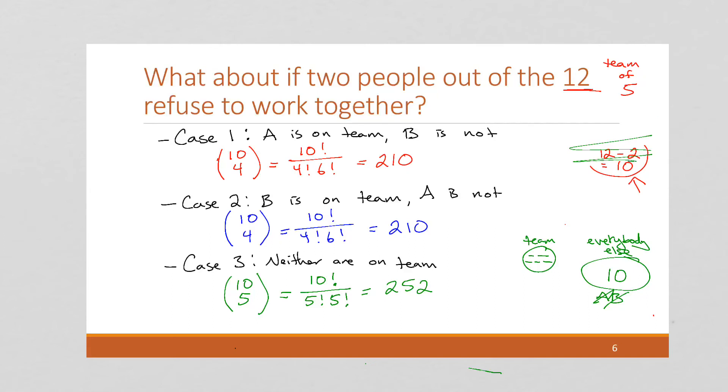And if we clean this up over here, we're going to find that the total number of ways to do this, to have two people refuse to be on the team, it's going to be 672 ways. Because again, we're going to pick either case 1 is going to occur or case 2 is going to occur or case 3. So we add and we get our total.